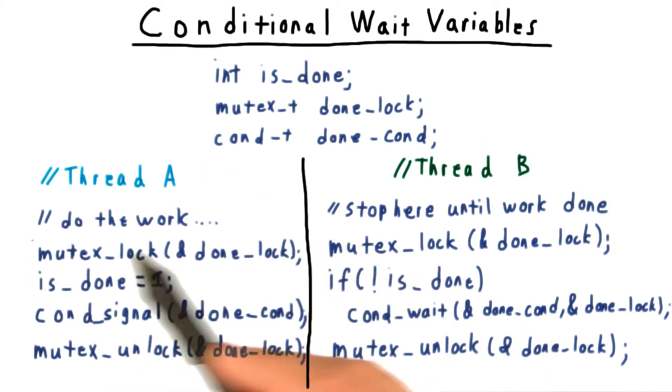Now after finishing the work, thread A is going to acquire the lock, change is_done to true, and then send a signal to anyone waiting on this condition, a signal that they should wake up. And then he'll unlock the lock.